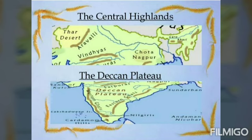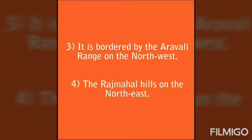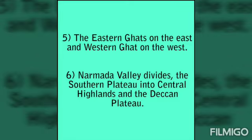Let us quickly recap. The Southern Plateau is triangular in shape and covers a large part of India. It is bordered by the Aravalli range on the northwest, the Rajmahal hills on the northeast, the Eastern Ghats on the east, and the Western Ghats on the west. The Narmada Valley divides the Southern Plateau into the Central Highlands and the Deccan Plateau.